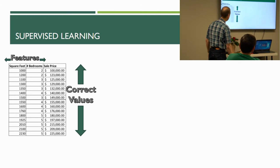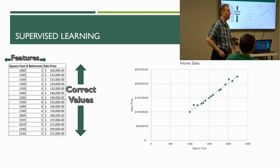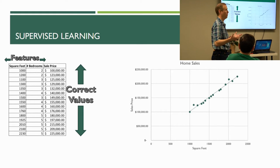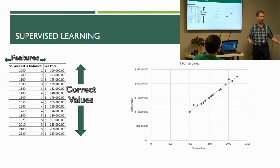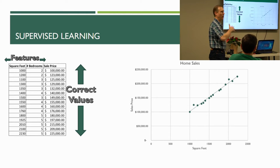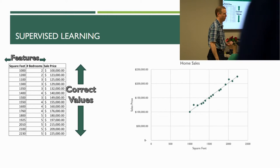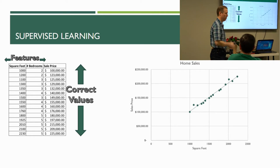If you ever took statistics, they taught you something called linear regression, which is actually a type of machine learning. You give it features like square feet and bedrooms, then you give it the correct answer — sales price — and you come up with a machine learning algorithm. Linear regression just tries to match a line to the data points and make predictions based on that line. There are many more sophisticated forms of machine learning that try to map other types of functions to data points, for things that aren't linear.